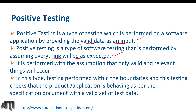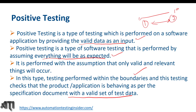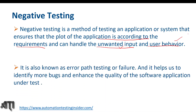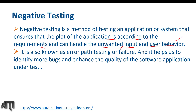Positive testing is performed within the boundaries, and it checks that the application behaves as per the specification document with a valid set of test data — for example, testing values within the 0 to 10 boundary. Negative testing is a method of testing that ensures the application can handle unwanted input and user behavior. Unwanted input means invalid values, and user behavior means invalid conditions. It is also known as error path testing or failure testing, and it helps identify more bugs and enhance quality.